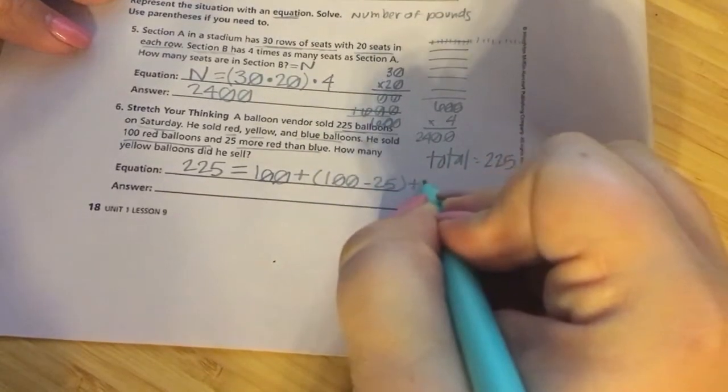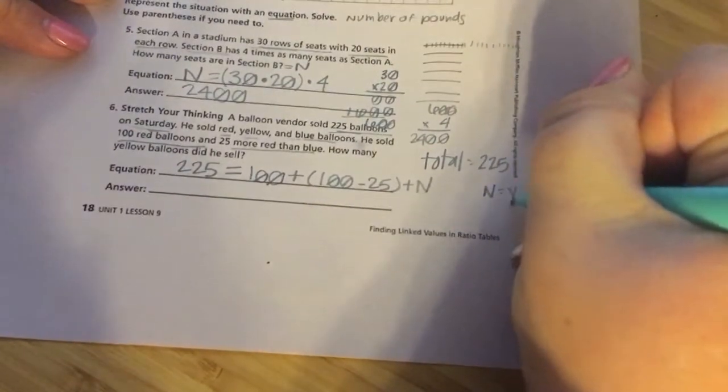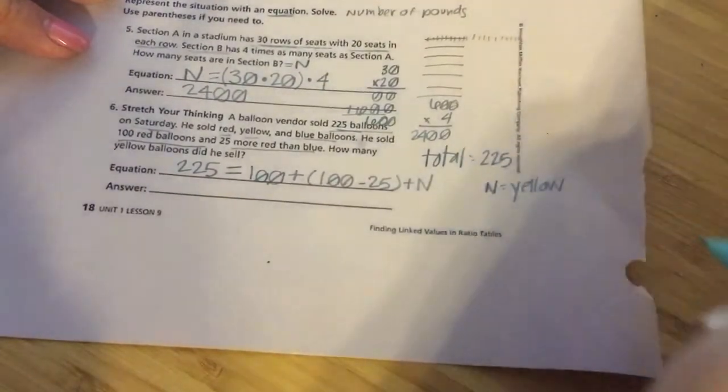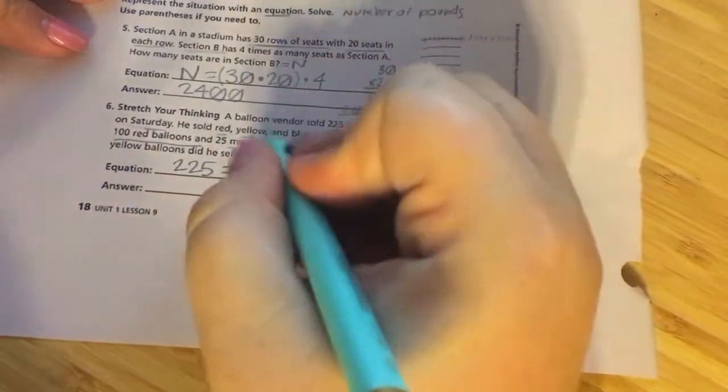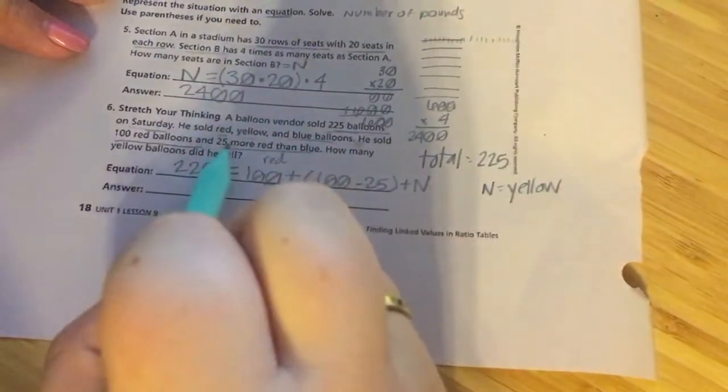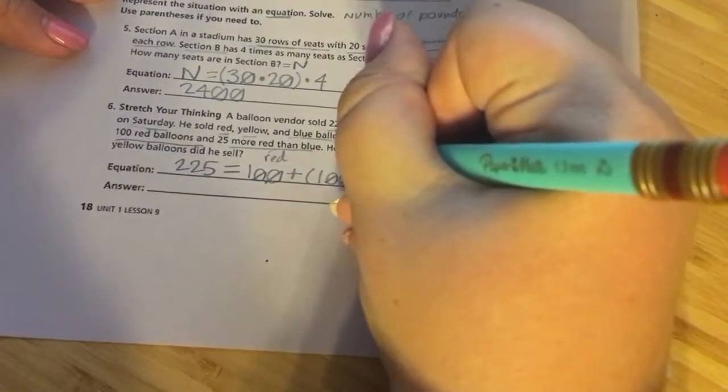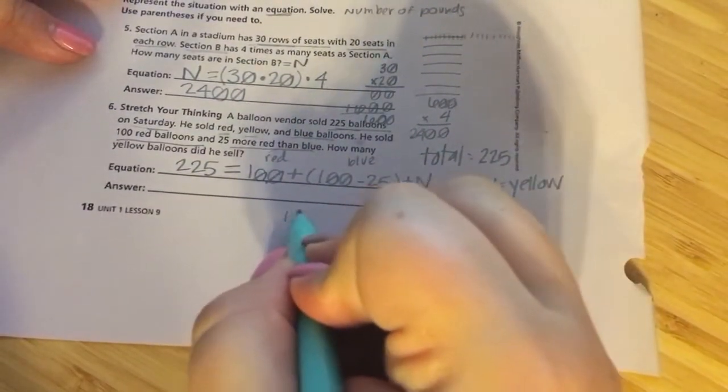Now that 100 is the red balloons. In the parentheses, 100 minus 25, that's the total of blue balloons. He sold 100 red balloons and 25 more red than blue. So red 100 and he sold more red than blue. So it's 100 minus 25 and the N are my yellow balloons. It's that number, that magic number I'm looking for.